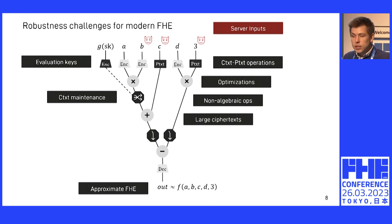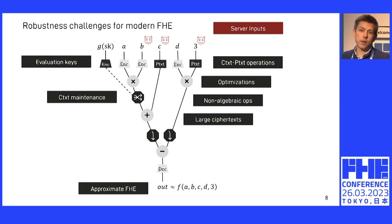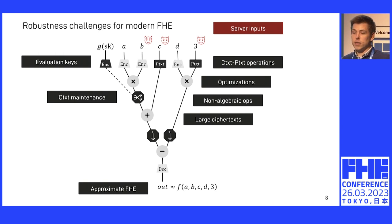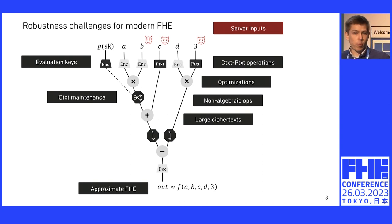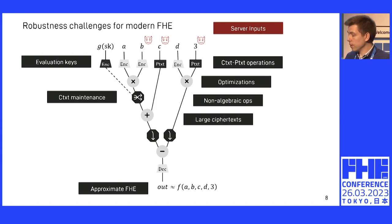And finally, kind of an inherent issue with FHE is that the ciphertext gets pretty large, and so any solution will run into inevitable scalability and efficiency challenges. This is why this is a very interesting problem to look at, but also why we don't really have a solution as of yet.